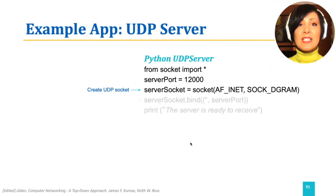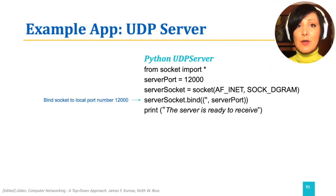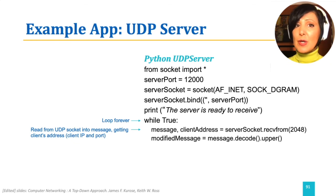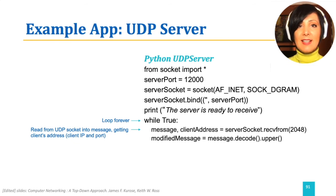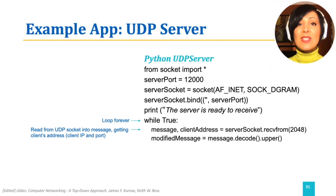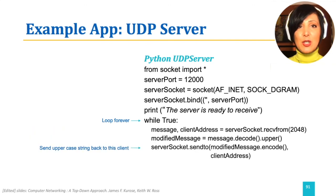The binding of the socket created to the specified server port happens next. Then a loop is created in which the server waits to read on a buffer of length 2,048 attached to its socket what is received from the client. It decodes it to a string and makes it uppercase. In the next step, it sends the modified message back to the same client whose address is read from the received packet.